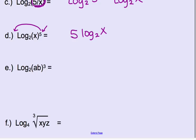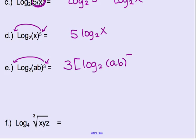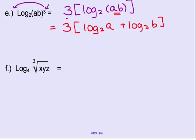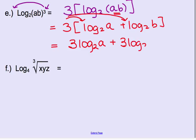Now we get into problems that use multiple properties. First, take care of the exponent 3 — it's a power, so bring it down in front: 3 times logarithm base 2 of (a times b). Now look inside: that's a product, so separate into logarithm base 2 of a plus logarithm base 2 of b. We still have the 3 out front, so distribute it to both: 3 times logarithm base 2 of a plus 3 times logarithm base 2 of b.